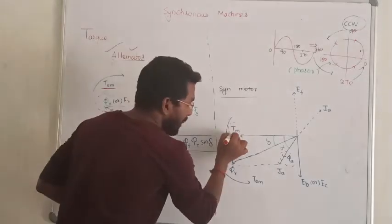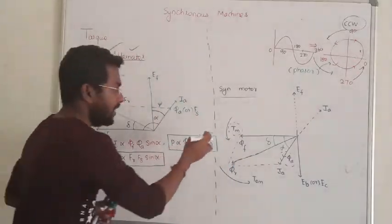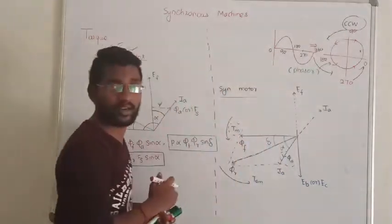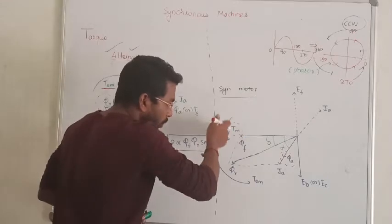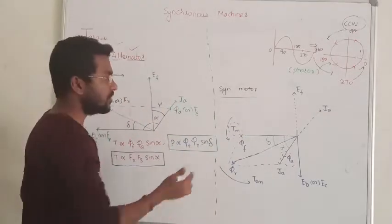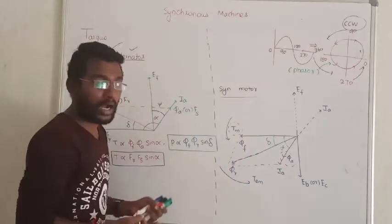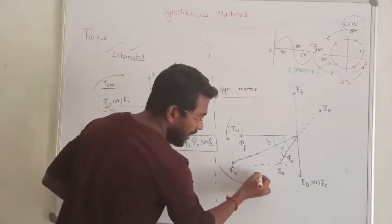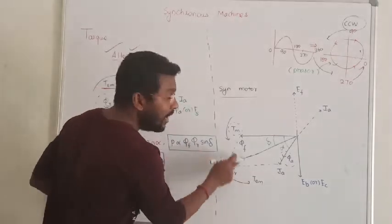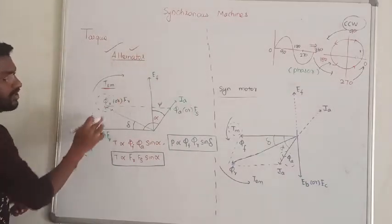The direction is counterclockwise. The mechanical torque, or load torque, developed by the prime mover, is traveling in accordance with the phasor — counterclockwise. So this prime mover torque is also counterclockwise. Both torques are aiding each other. So the conclusion is: in the case of the synchronous motor, the torque developed by the prime mover and the electromagnetic torque developed by the motor are both aiding each other. In the alternator, these two torques are opposing each other.